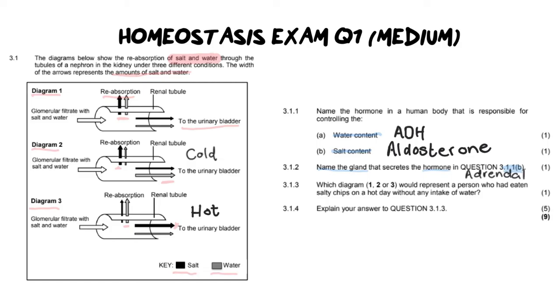Moving on to the next question, 3.1.3. It says, which diagram 1, 2, or 3 would represent a person who has eaten salty chips on a hot day without any intake of water? Now, we've got a couple of important pieces of information here. Number one, you've been eating salt, which means your salt content in your blood is going up. It's a hot day, so you're sweating. So what's happening? You're losing water. And it tells you you're not taking in any water. So essentially, what you're doing is you are dehydrating yourself.